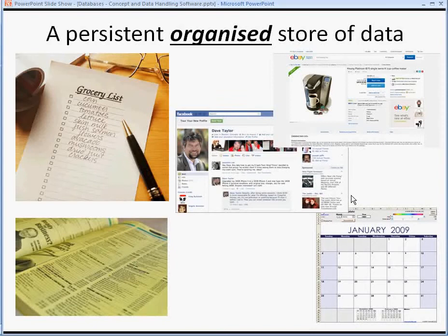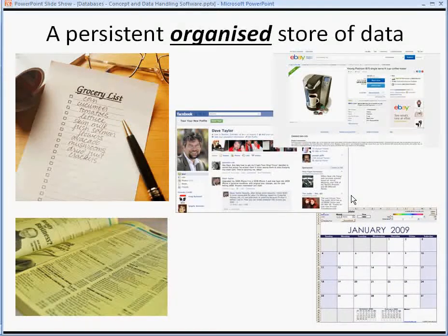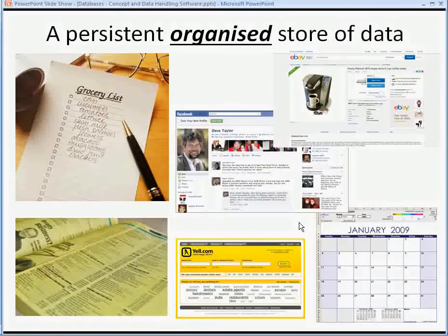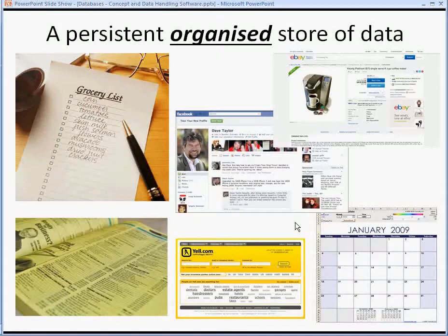The Yellow Pages stores its data by business type alphabetically and then by business name alphabetically, but because it's also available electronically on the internet, we have more control — we can search for particular businesses and filter them efficiently. Some of the advantages of electronic databases over paper-based databases is that we can search faster, sort, and filter things more quickly.